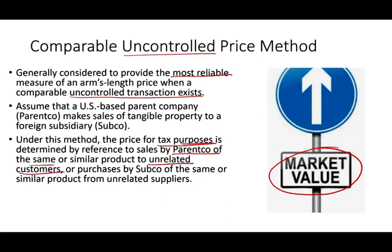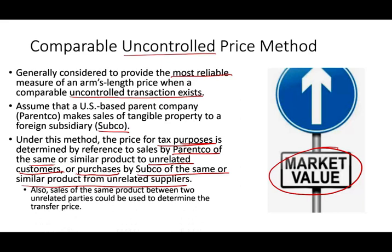One way to determine how much to charge is to see how much we would charge someone else other than our subsidiary — how much we would charge an unrelated party like Sopco. Or we could look at the purchases by Sopco of the same or similar product from an unrelated party, or how much our subsidiary would have to pay if they did not buy it from us. Also, the sale of the same product between two unrelated parties could be used to determine the transfer price.